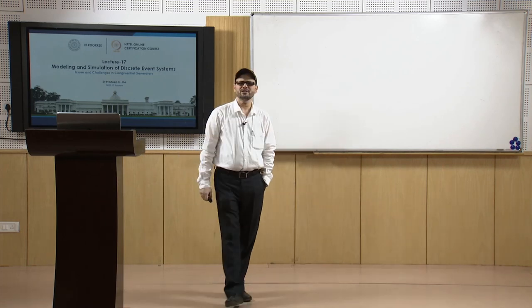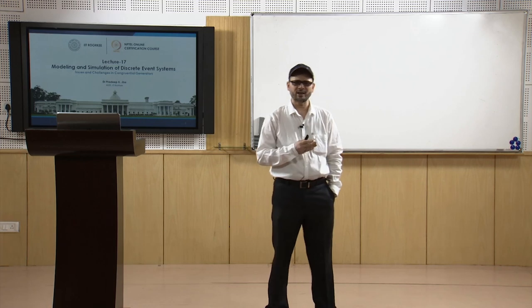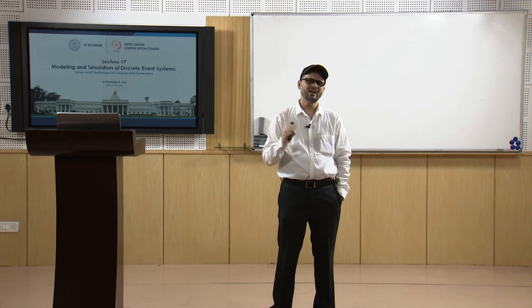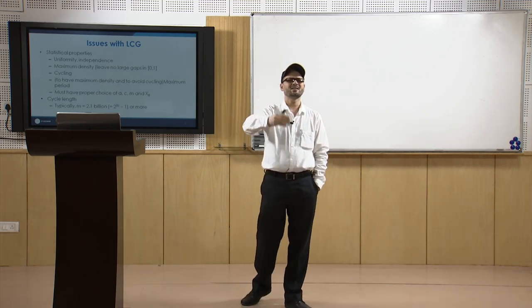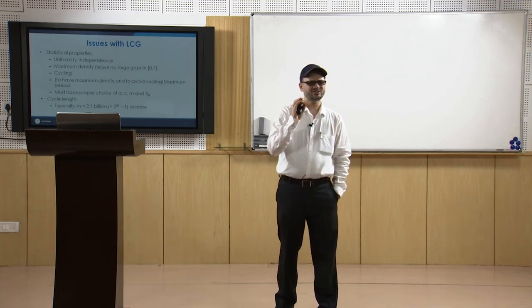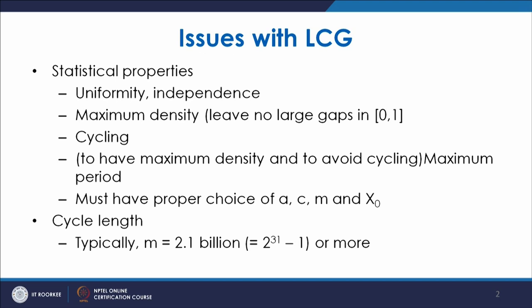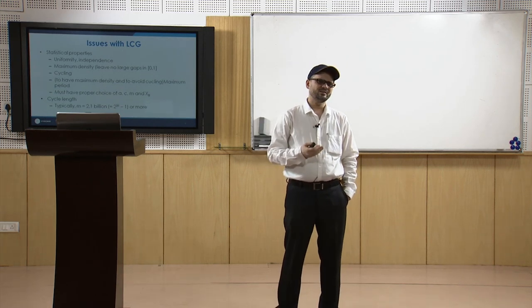The properties required are uniformity and independence. Uniformity means the probability should be the same — if you draw the plot between z_i and z_{i+1}, the points should be scattered across the whole domain. Similarly, density means there is very little gap between 0 and 1; when you generate numbers there should not be a large gap between them.